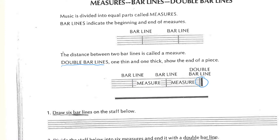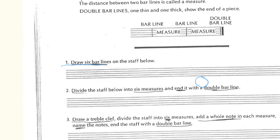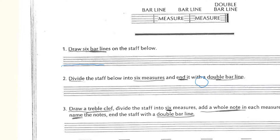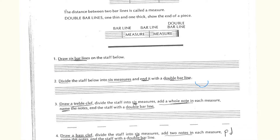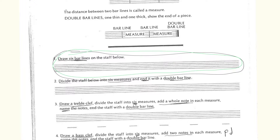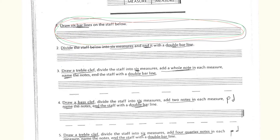Now the bottom part is pretty simple — all you have to do is draw six bar lines on the staff below. Divide it as evenly as possible. Don't put them all on one end; spread them out so the staff is divided evenly.